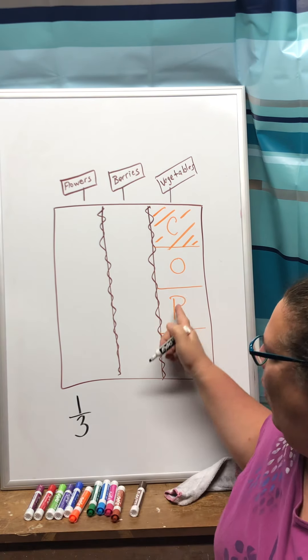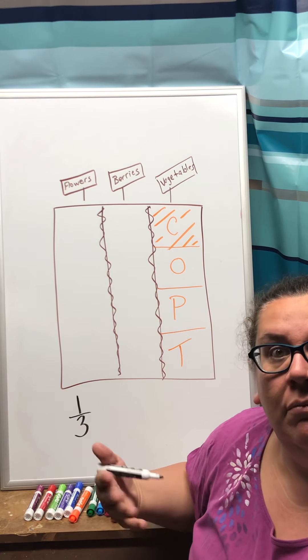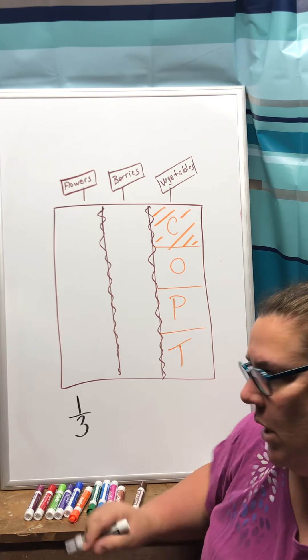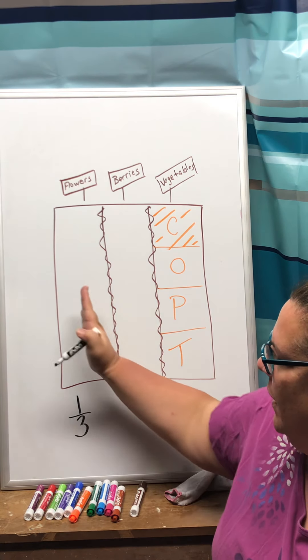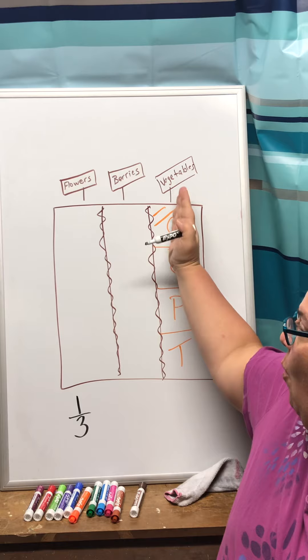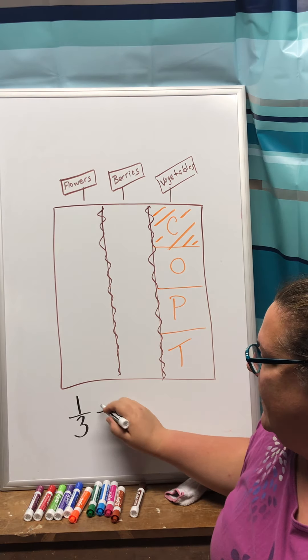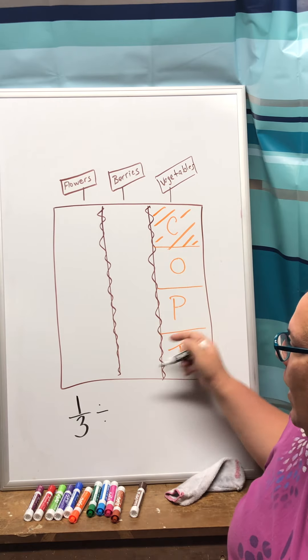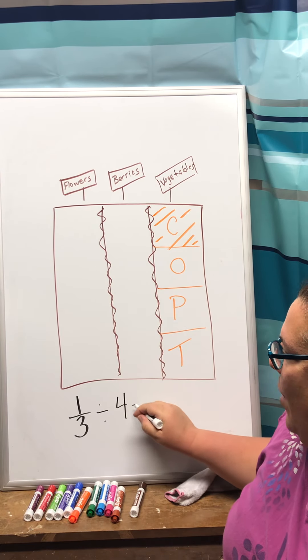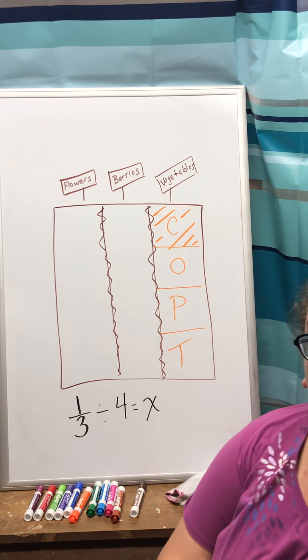We divided that 1/3 into how many pieces? We divided it into four. So my fraction 1/3 again is I'm looking at one of the three parts that I cut it into and I'm going to divide that into four pieces. So my problem right now looks like that.